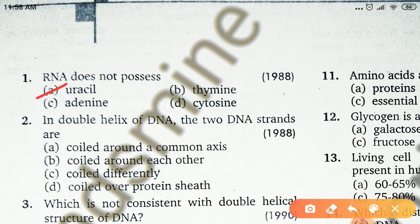The second question is: in the double helix of DNA, the two DNA strands are — coiled around a common axis, coiled around each other, coiled differently, or coiled over a protein sheet. The right answer is coiled around a common axis, because in DNA the two strands coil around a common axis.